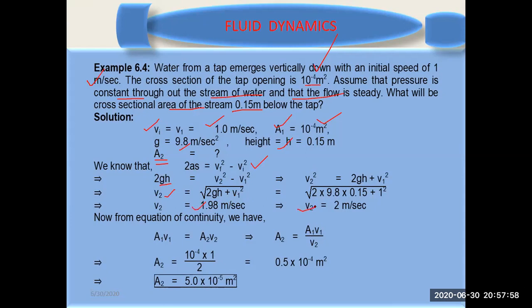Calculate v₂ by putting the values. You are getting 2 meters per second. Why you have calculated this is because you need to calculate the speed at the other outlet, and due to this reason you will apply equation of continuity.